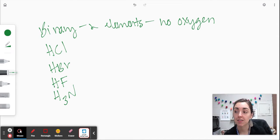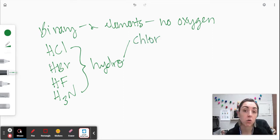Now these all have something in common. They all start with the prefix hydro. Binary acids always start with the prefix hydro. And then from there, we just write the element stem. So this is chlorine.